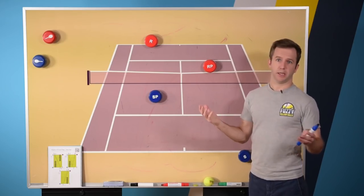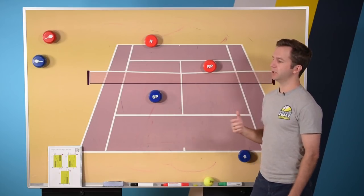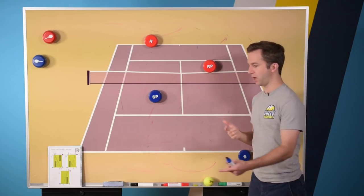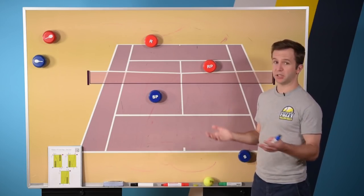And if they don't, and you hit it right at them, okay, that happens. But you get yourself into more trouble when you're trying to watch the net person and watch the ball.